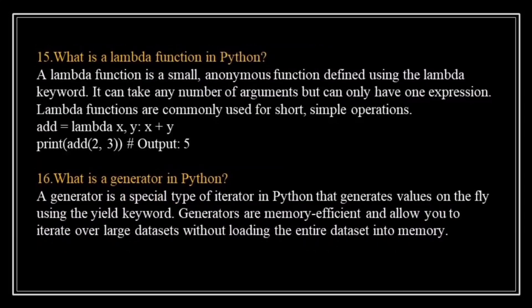What is a lambda function in Python? A lambda function is a small anonymous function defined using the lambda keyword. It can take any number of arguments but only one expression. Lambda functions are commonly used for short and simple operations. For example, the line add = lambda x, y: x + y defines a lambda function called add. It takes two arguments x and y and adds them together using the plus operator. When you call add(2, 3), it substitutes x with 2 and y with 3, resulting in 2 + 3 = 5. Therefore, the output of print(add(2, 3)) is 5.